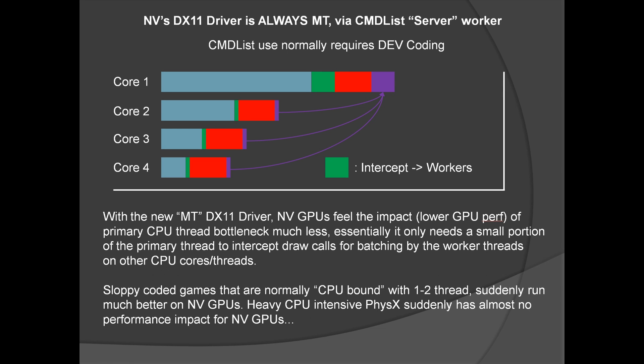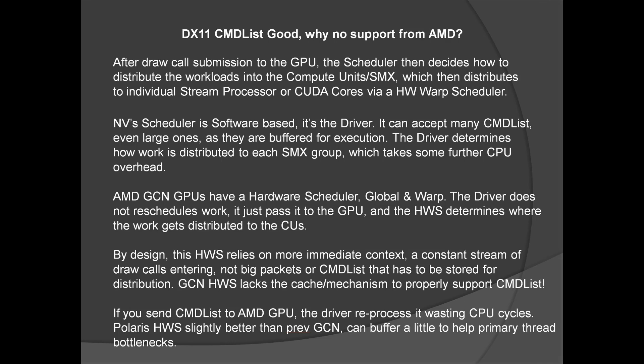With the new multi-threaded DirectX 11 drivers, Nvidia GPUs suffer much less from primary CPU thread bottlenecks. It essentially only needs a small portion of the primary thread to run the server process for batching, with worker threads on the other CPU cores. Games that are single-threaded suddenly run great on Nvidia GPUs — examples like World of Tanks or ArmA 3, both single-thread bound, run much faster on Nvidia GPUs. Even 3DMark's DirectX 11 API overhead test runs almost identical for Nvidia GPUs in single-thread or multi-thread mode. As a side effect, intensive CPU physics in games have almost no performance impact for Nvidia GPUs, because they're immune to primary thread bottlenecks.